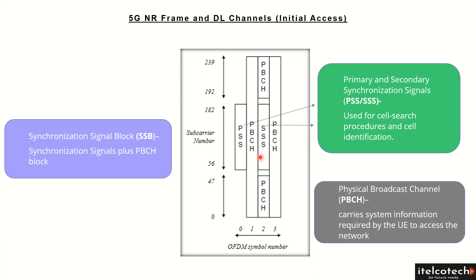The PBCH is the broadcast channel carrying the system information required by the UE to access the network. It spans across three OFDM symbols — symbol 1, 2, and 3 — and carries around 240 subcarriers, but on one symbol leaving an unused part in the middle where the SSS is. This is the synchronization signal block, which is very important for initial access, and we have a separate lecture dedicated to it.